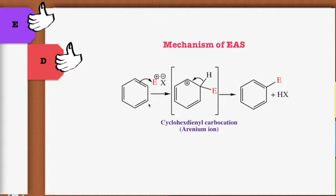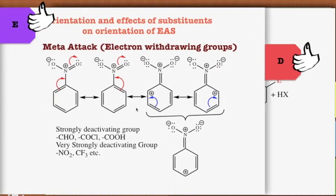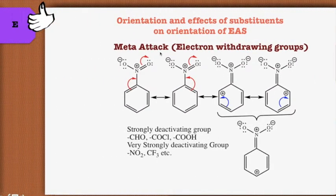From the first module, during structural elucidation, we saw that all carbon atoms in benzene are equivalent, so the incoming electrophile may attack any one of the carbon atoms to give monosubstituted benzene. But if you react the electrophilic reagent with monosubstituted benzene, the incoming electrophile will be oriented at the ortho, meta, or para position, depending on the type of substituent already present in the benzene ring.